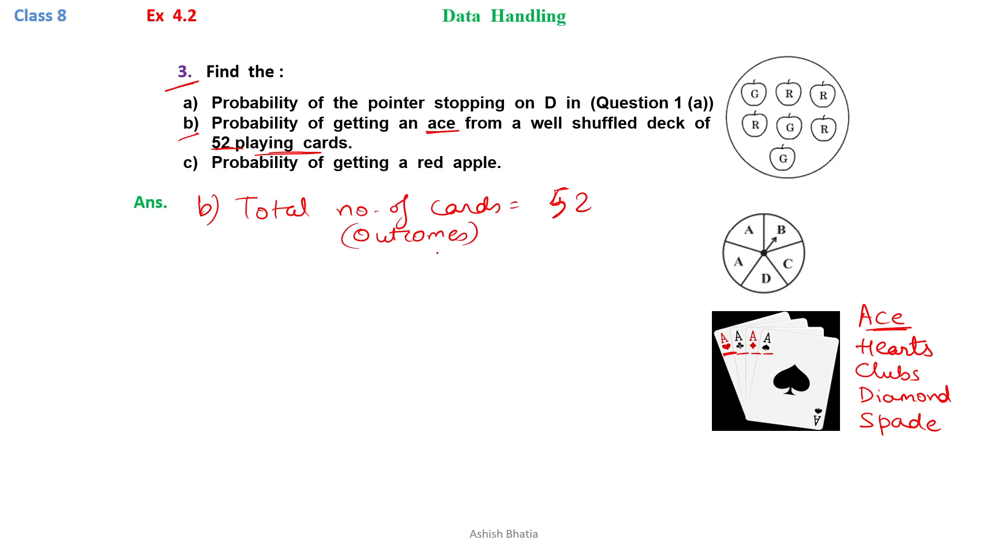And favorable outcomes—here, the favorable outcomes are aces of four different types. This isn't given in the problem, so we use our knowledge that there are four types of aces.